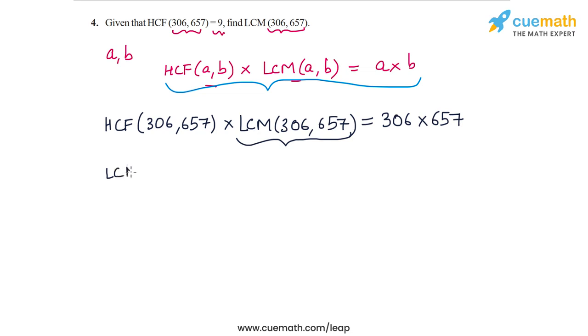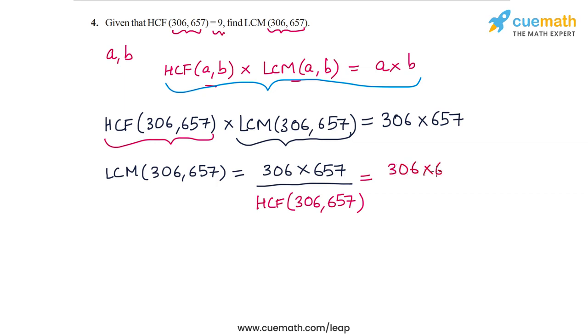The LCM of 306 and 657 will be the product of the two numbers, 306 × 657, divided by their HCF. So we have 306 × 657 divided by HCF(306,657), which is 9.